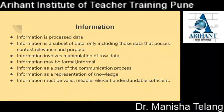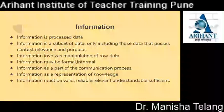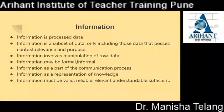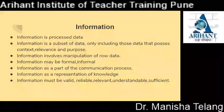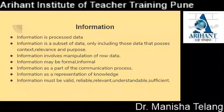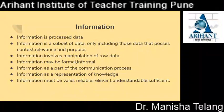Information is processed data. Information is a subset of data, only including those data that possess context, relevance and purpose. Information involves manipulation of raw data. Information may be formal and informal. Formal information involves formal letters, structured reports and training materials. Informal information means unofficial information and is communicated by casual conversation, email or text messages.